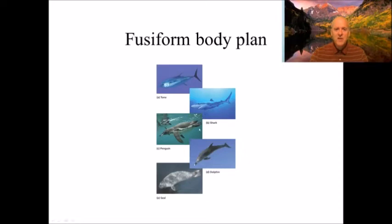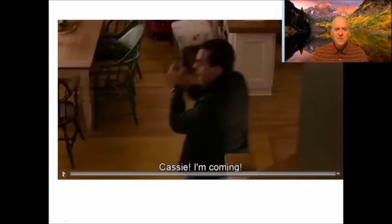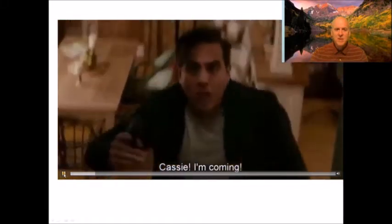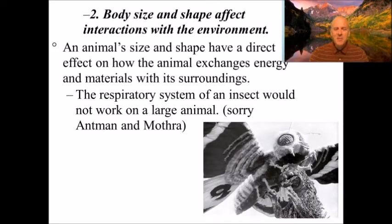You can see all these animals — two fish, a bird, and two mammals — looking very similar even though they're not closely related at all. Animal size and shape have a direct effect on how animals exchange energy and materials with their surroundings. The respiratory system of an insect would not work on a large animal, so much for Mothra and Ant-Man — you can't get insects that large; the way they breathe is very different from ours.